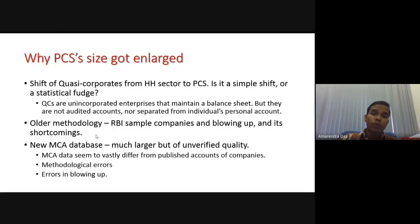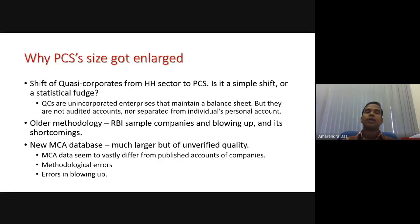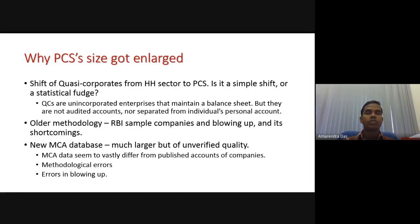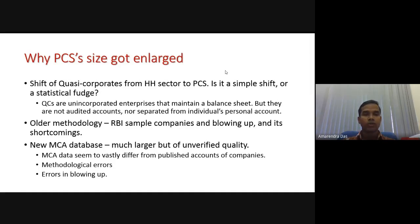Now the older method used to estimate industrial output: the CSO used to take the RBI sample of companies, because RBI collects information on companies operating in India due to financial transactions. You cannot take data of all industries, so they take a sample of companies, observe the trend of these companies, take the growth rates based on that, and then blow it up — take a small sample and then estimate the totals — to get the total output of the manufacturing sector.